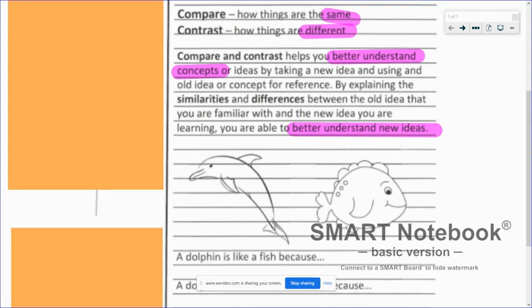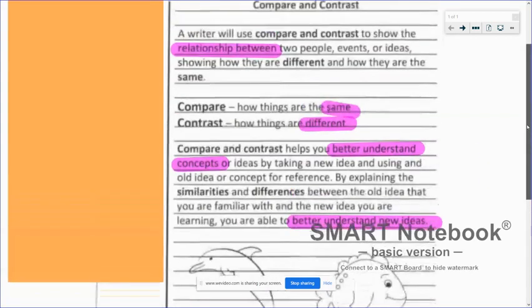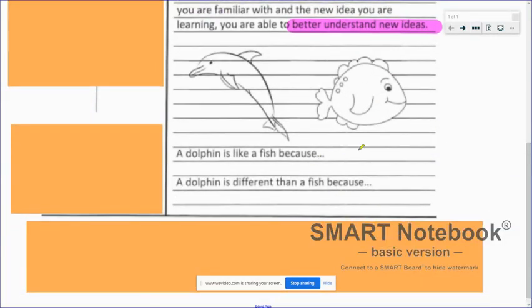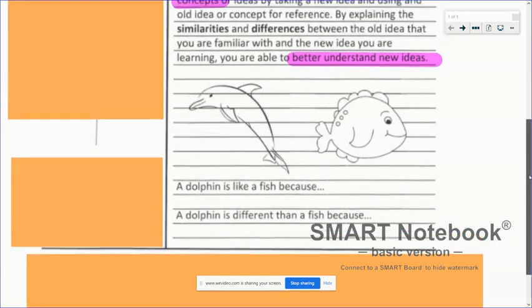And they have an example down here, which is a dolphin. A dolphin is like a fish because, and then a dolphin is different than a fish because. And you guys have done this a lot as you've been going through your elementary classes. You've done a lot of comparing and contrasting.